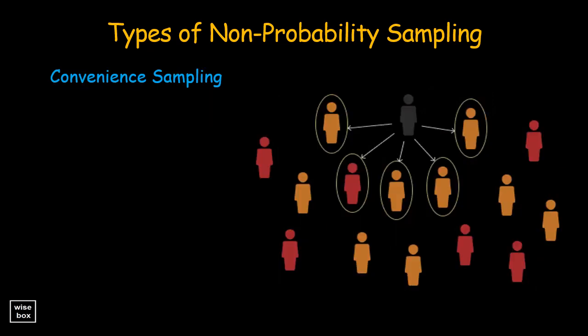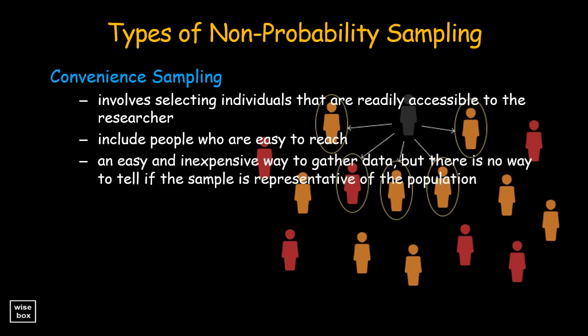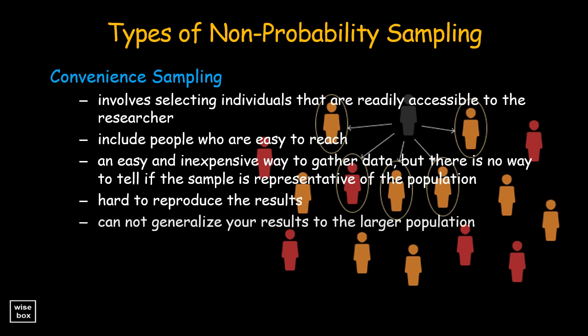Convenience sampling is a non-probability sampling procedure that involves selecting individuals that are readily accessible to the researcher, or those who are easy to reach. This is an easy and inexpensive way to gather initial data, but there is no way to tell if the sample is representative of the population. Results from these samples are easy to analyze but hard to reproduce, and you will not be able to generalize your results to the larger population. Convenience sampling is sometimes called accidental or grab sampling.